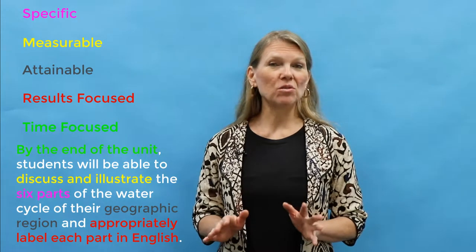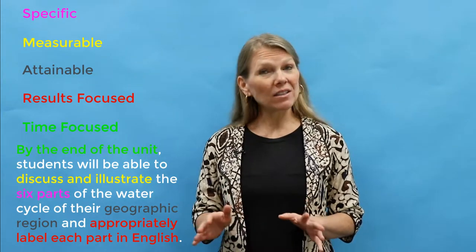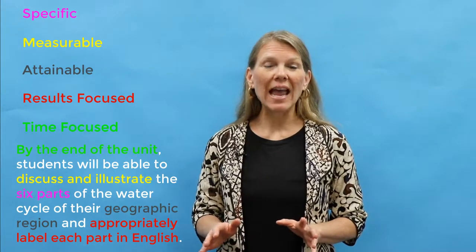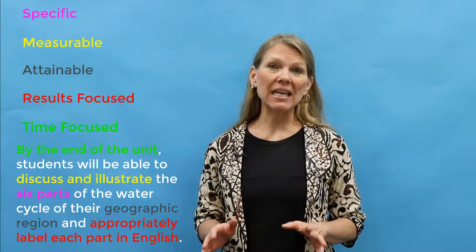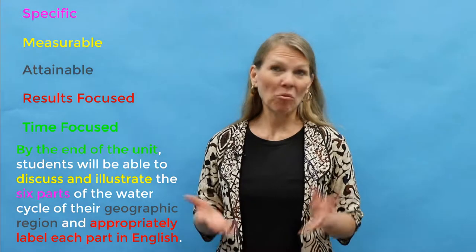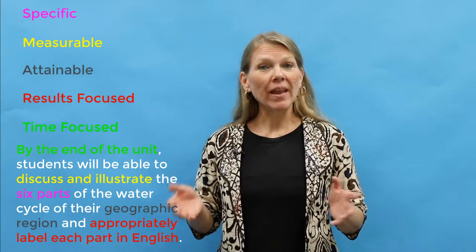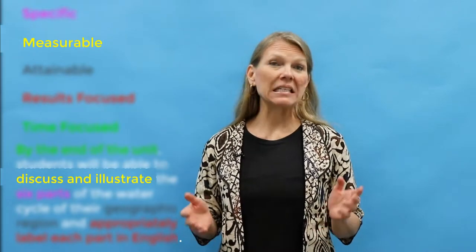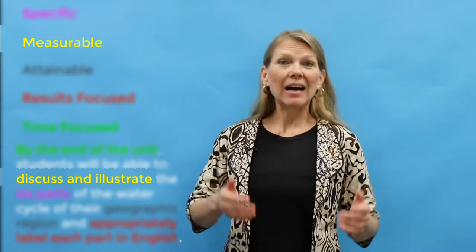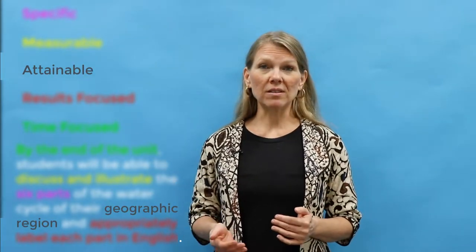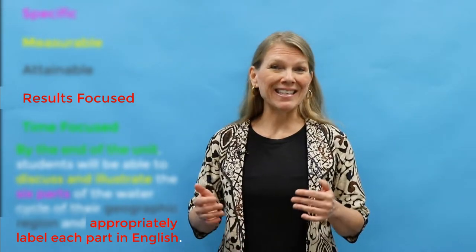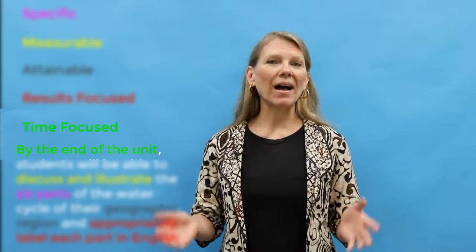By the end of the unit, students will be able to discuss and illustrate the six parts of the water cycle of their geographic region and appropriately label each part in English. Why is this SMART? Specific is found with 'the six parts.' Measurable is found with 'discuss and illustrate.' Attainable is with 'the geographic region.' Results focused is 'appropriately label each part in English.' And time focused is 'by the end of the unit.'